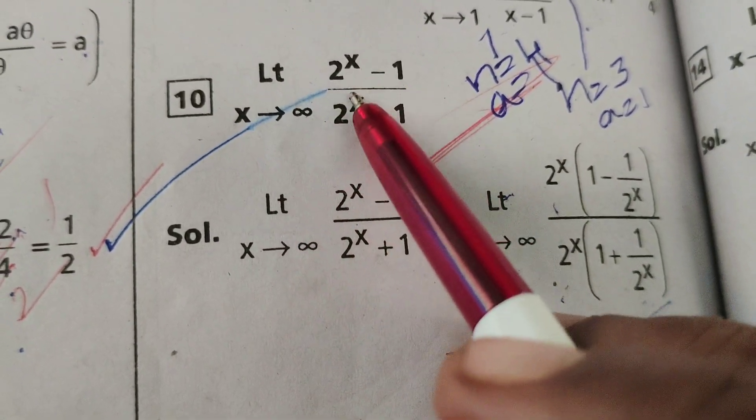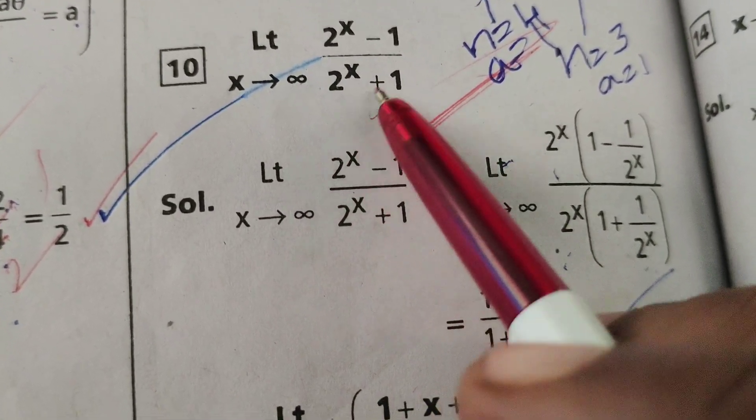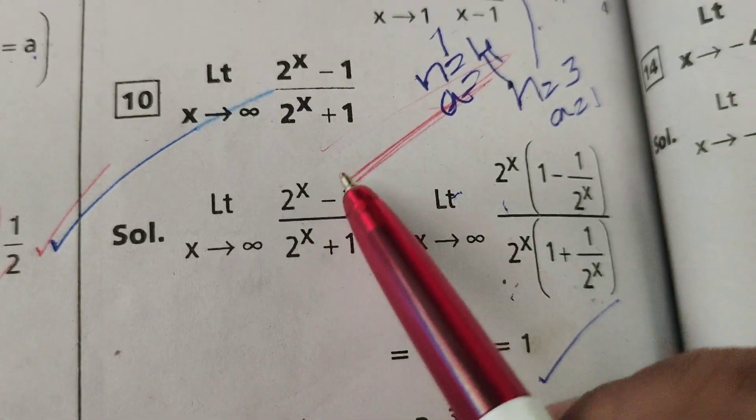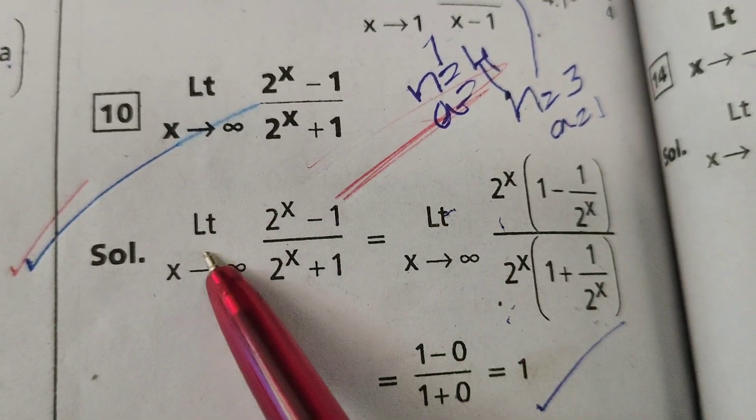Limit x tends to infinity, 2 power x minus 1 by 2 power x plus 1. First of all, write the given problem.